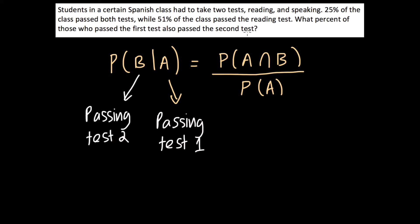So I hope that's clear. And once we have this, then everything should be easy. It's just a matter of substituting it into the formula. And we have probability of A and B. And that we know is 25%, 25% is 0.25. And the probability of A is probability of passing the first test. And it says 51% of the class passed the reading test.